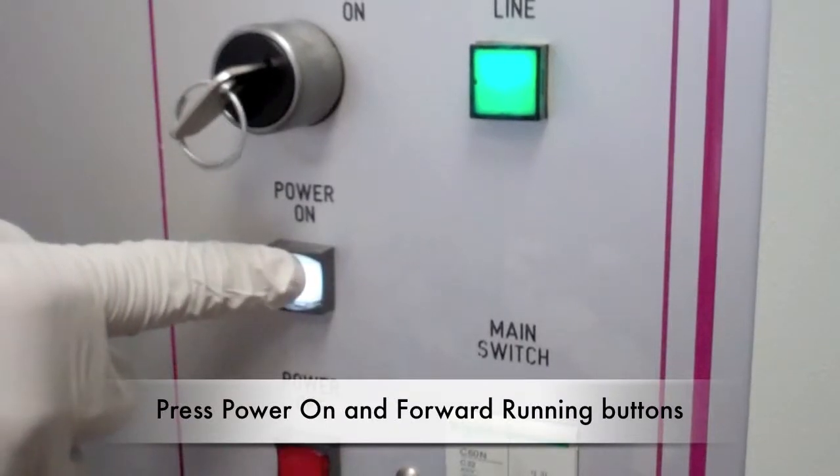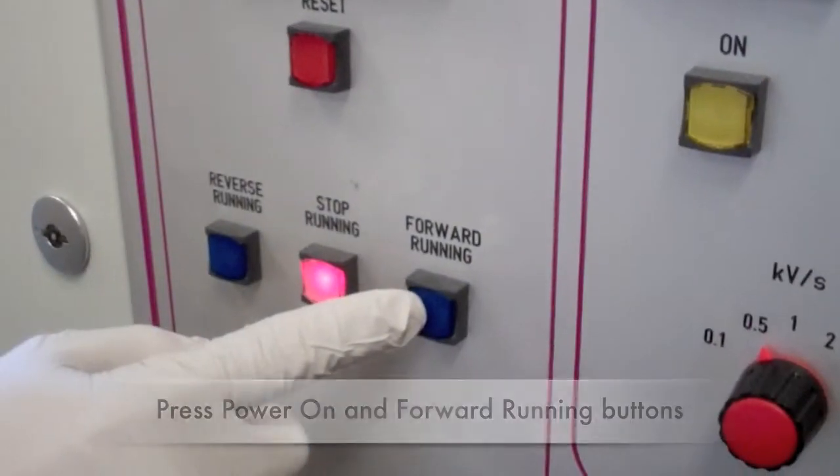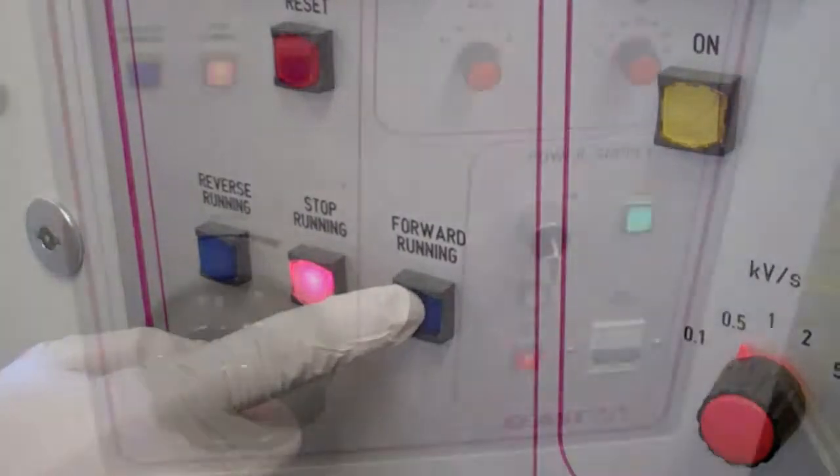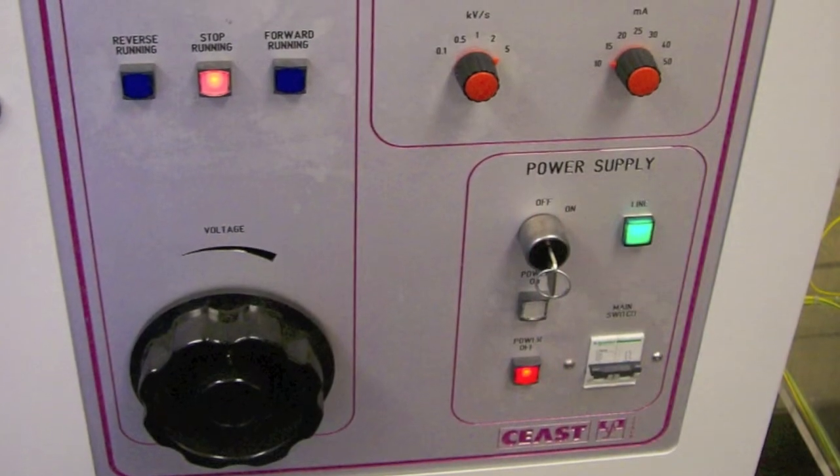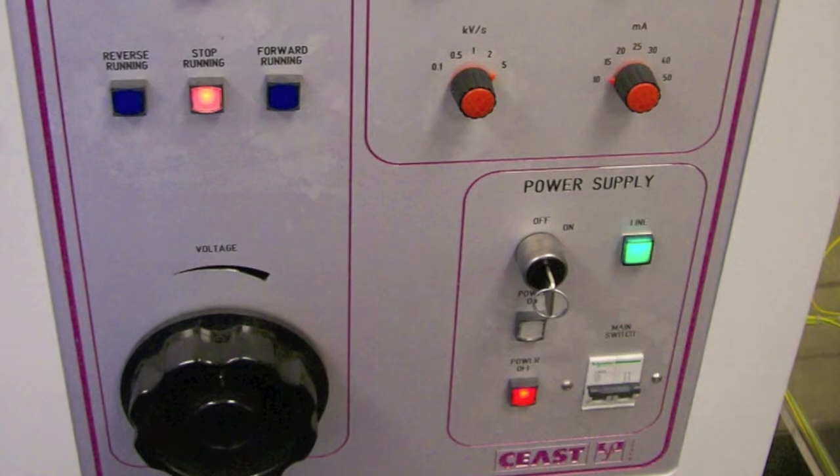Press the clear power on button to allow voltage to build. To begin the voltage increase, press the forward running button and the voltage knob will begin to turn clockwise. The voltage will now be increasing at a rate of 0.5 kilovolts per second.